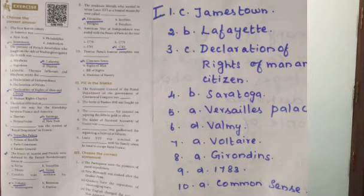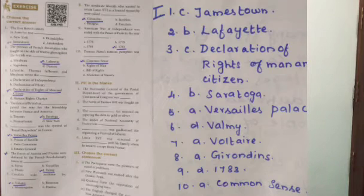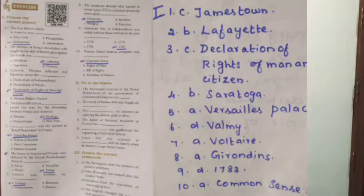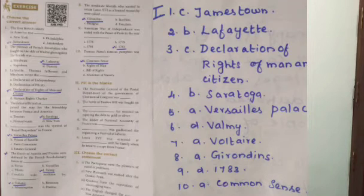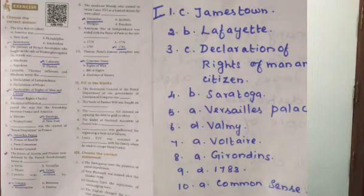Question 8: The moderate liberals who wanted to retain Louis XVI as a limited monarchy were called Answer A — Girondins. Question 9: The American War of Independence was ended with the Peace of Paris in the year Answer D — 1783. Question 10: Thomas Paine's famous pamphlet was Common Sense — A is the right answer.